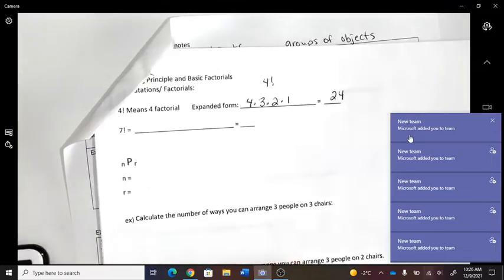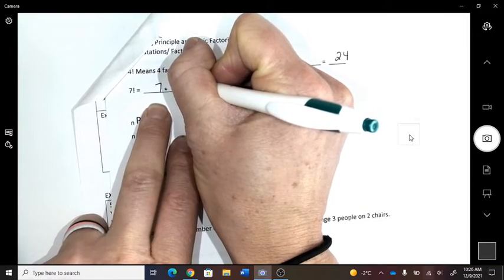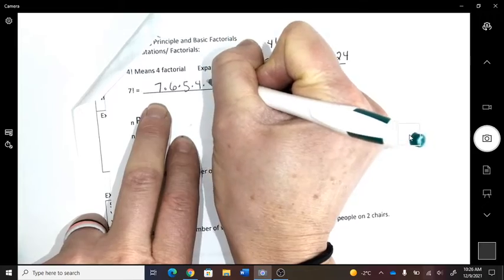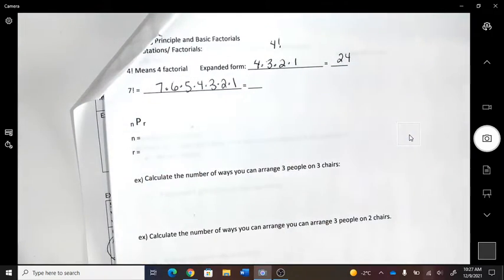Okay. Seven factorial. So, how would I write it out? Seven times six, five, four, three. How do I know where to stop? What do I go down to? All the way to one. Okay, so I obviously don't want to do that by hand, so can you try doing that with a special button? And then you can see if your answer matches mine, if you can find your button for that.